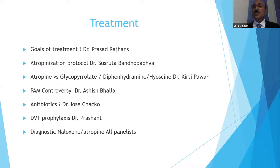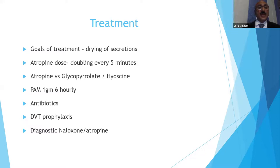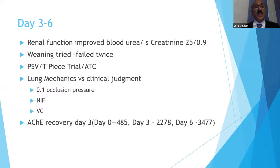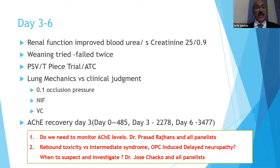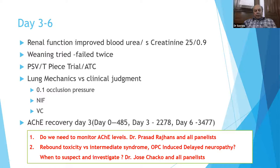Moving to extubation failure and intermediate syndrome in this patient — the patient's AKI improved, cholinesterase levels improved, but extubation failed. Intermediate syndrome occurs in 10-30% of cases, particularly with highly fat-soluble compounds. Typical signs include proximal muscle weakness, inability to lift the head, neck flexion weakness, reduced tendon reflexes. Serial cholinesterase levels help confirm it. The only management is patience — some patients require several weeks to recover.